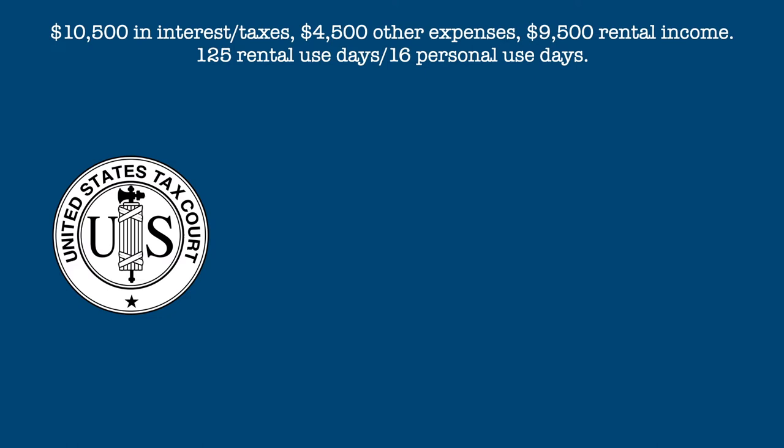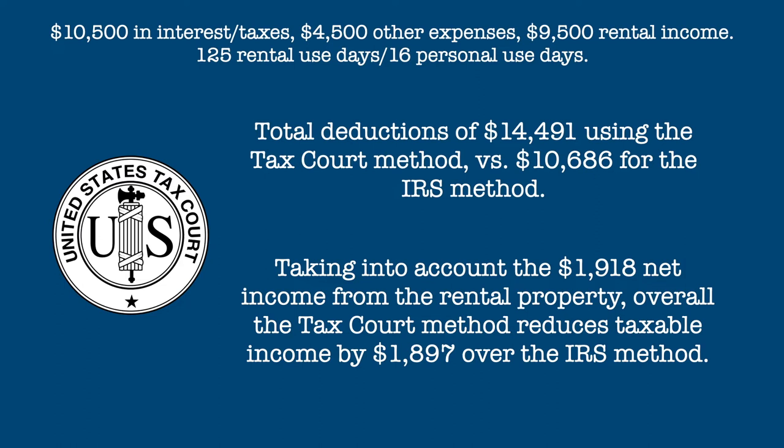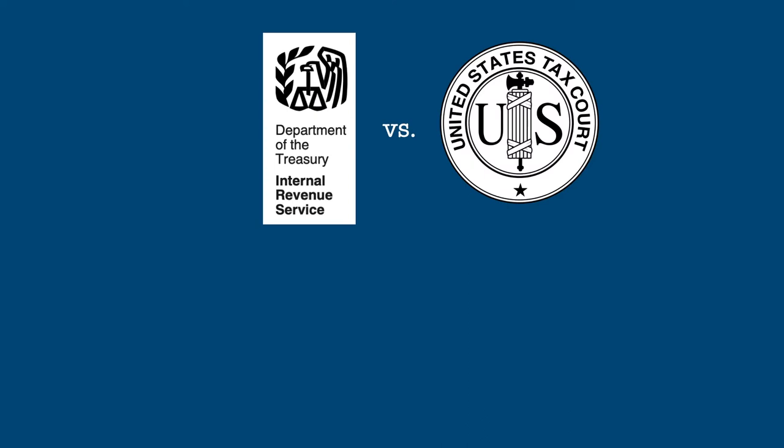The tax court method allows for $14,491 in deductions versus $10,686 in deductions using the IRS method. Since using the tax court method would result in net income on the rental property of $1,918, this would partially offset the additional deductions, with the overall result of a reduction in taxable income of $1,897 using the tax court method over the IRS method.